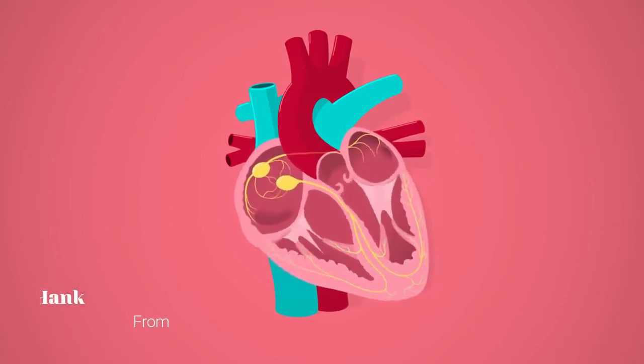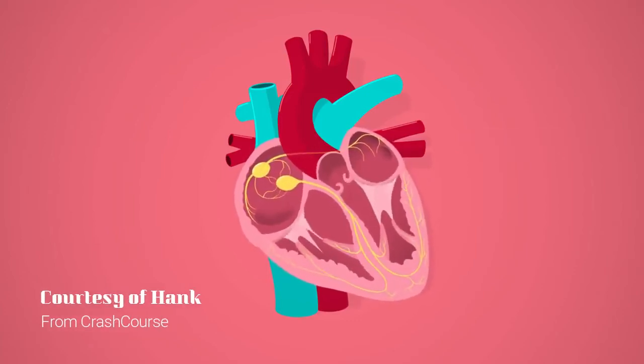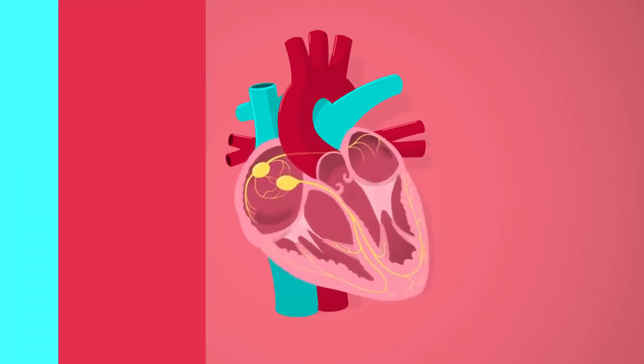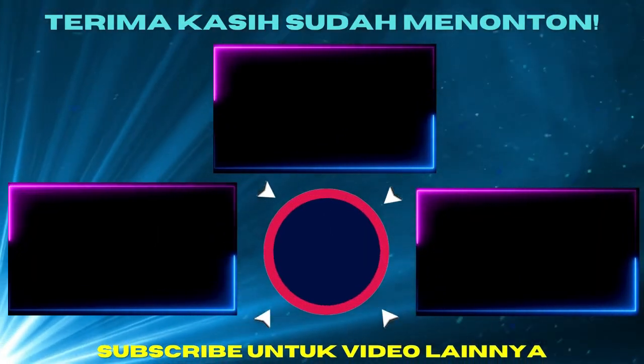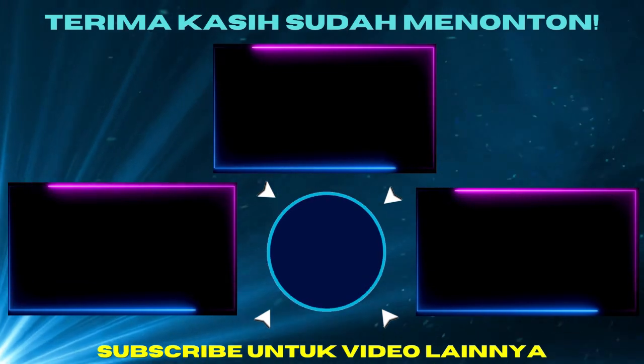And everything just described, from when the SA node fires to when the last of the ventricular cells contract, completes one full cycle of the heart's electrical conduction system.